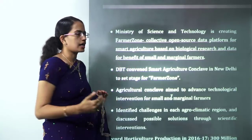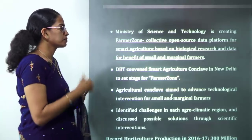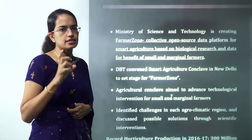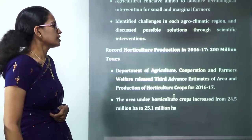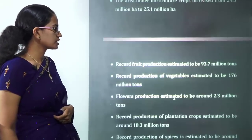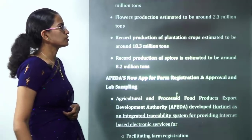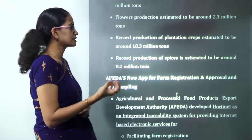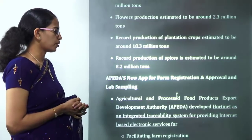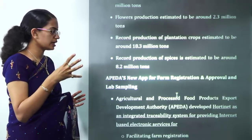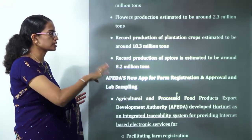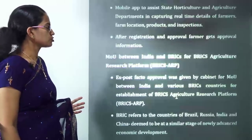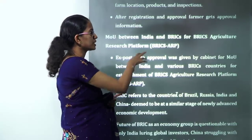The Farmer Zone Agriculture Smart Agriculture Conclave has taken place recently. Farmer Zone is an open-source data platform for producing smart and climate-resilient agriculture, benefiting small and marginal farmers. Under horticulture, the HortiNET app is an important initiative — an integrated system providing internet-based electronic services for horticulture, fruit culture, and registration of farmers.